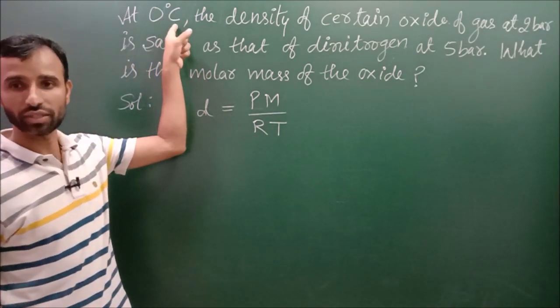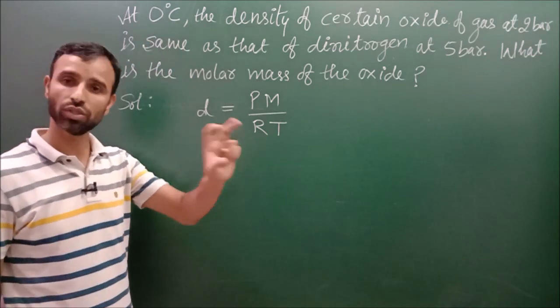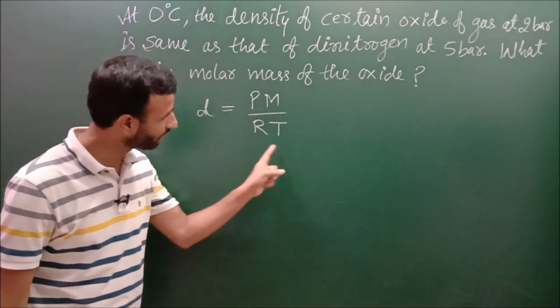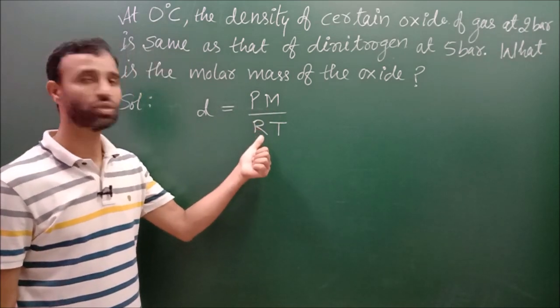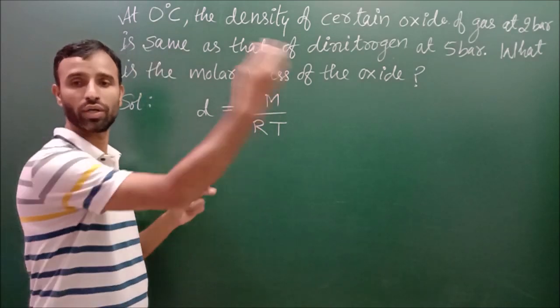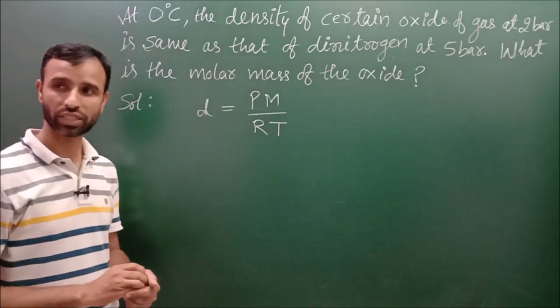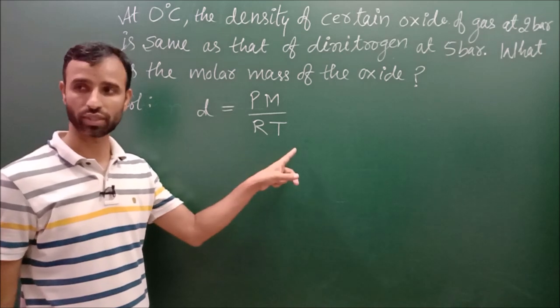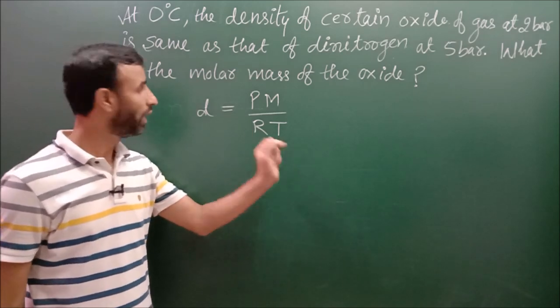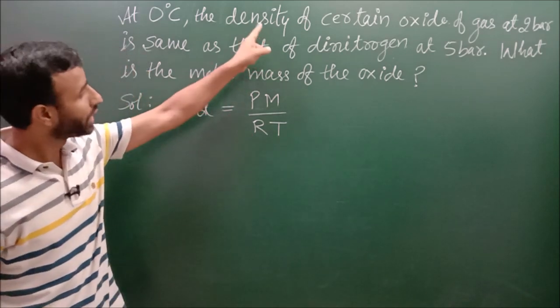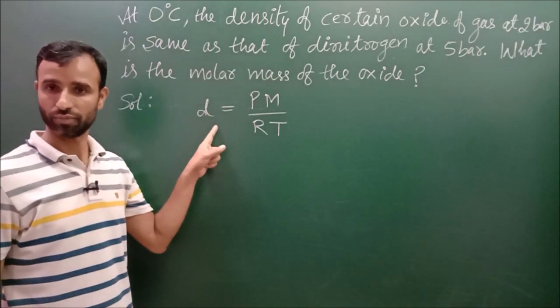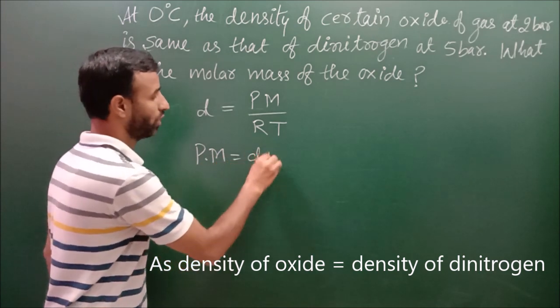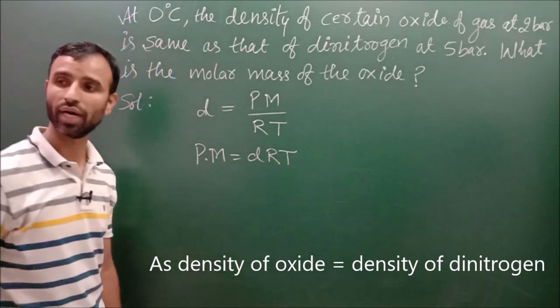According to the relation we have derived, density is Pm over RT. Now here, you know, at 0 degree Celsius that means temperature is constant. So those terms which are constant keep it on left side and other terms on the right side. First R is constant, T is constant. Keep it like this. Now density is also constant. That implies P into M equal to DRT.